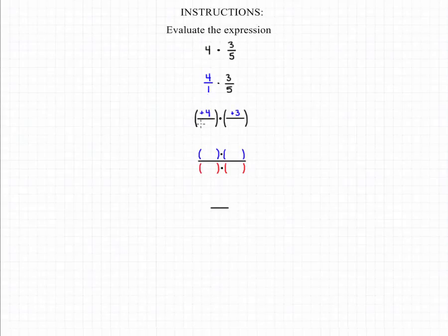Now that we have both of our terms expressed as fractions, we can multiply them by multiplying the numerators and the denominators. That will effectively give us one fraction with positive 4 times positive 3 in the numerator and positive 1 times positive 5 in the denominator.